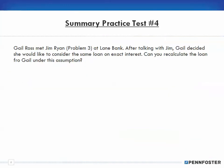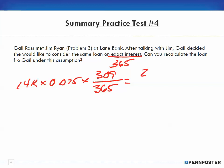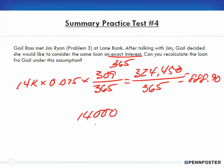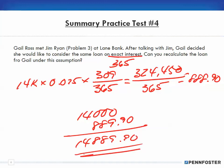Problem 4 is basically saying the same thing except this time we want to know what it is based upon the exact interest which is 365 days. Everything is basically the same: 14,000 times 0.075 times 309 exact days, but now instead of 360 it's over 365. We're still going to have 324,450 in the numerator but this time we're going to divide by 365. 324,450 divided by 365 gives us $888.90, and of course we add that to the principal of $14,000. That means $14,888.90 is the payoff amount, the maturity value.